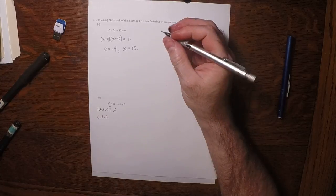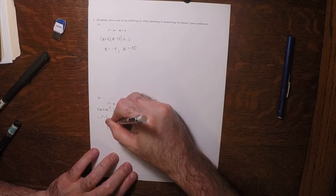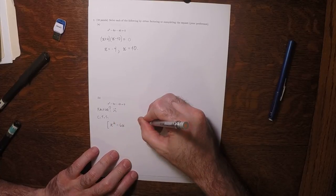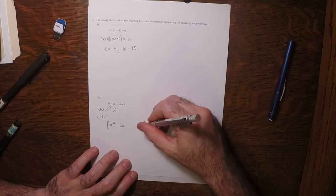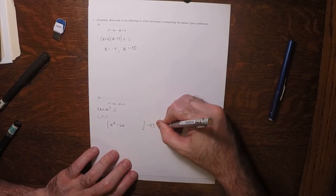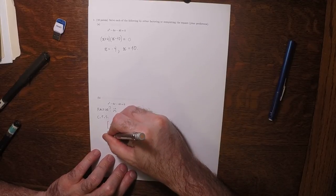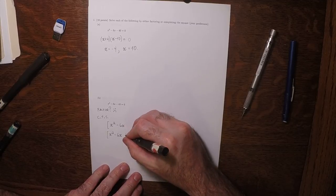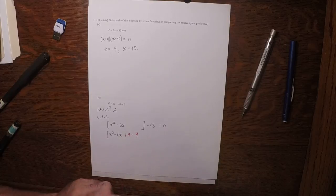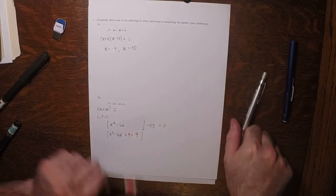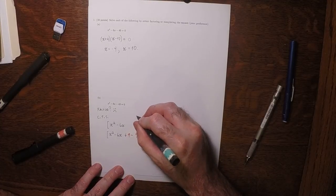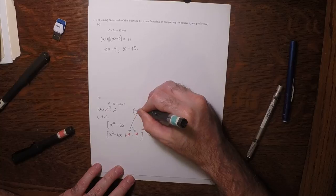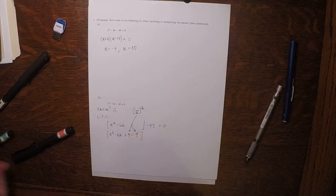So then we're going to complete the square. So we'll collect the terms with x, x squared minus 6x, and exclude the terms without x. And then now we're going to add 9 and subtract 9. And that number is always something over 2 squared, and something over 2 is always this number.